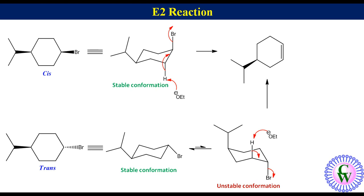Since the elimination in the cis isomer occurs via a stable conformation, the rate of reaction will be fast. While in the trans isomer the elimination occurs via an unstable conformation, so the rate of reaction will be slow.